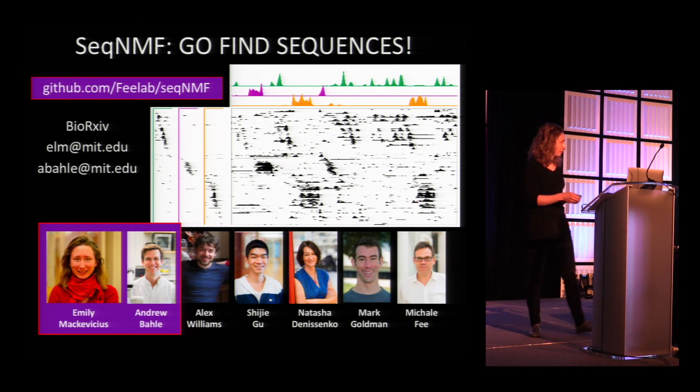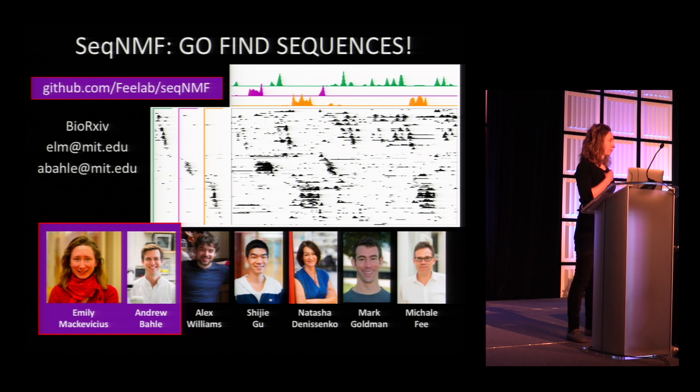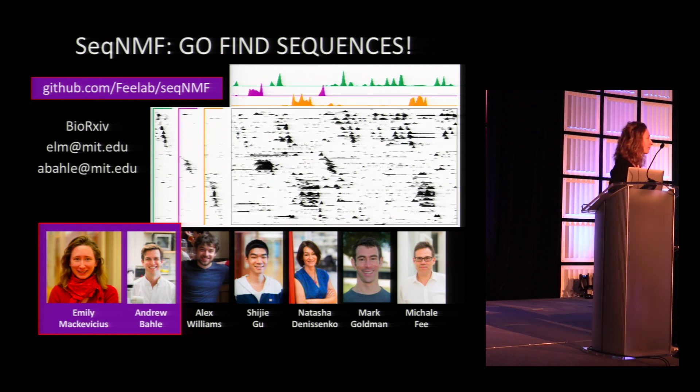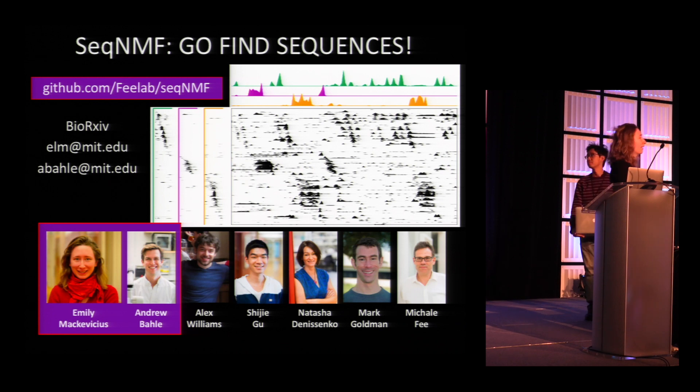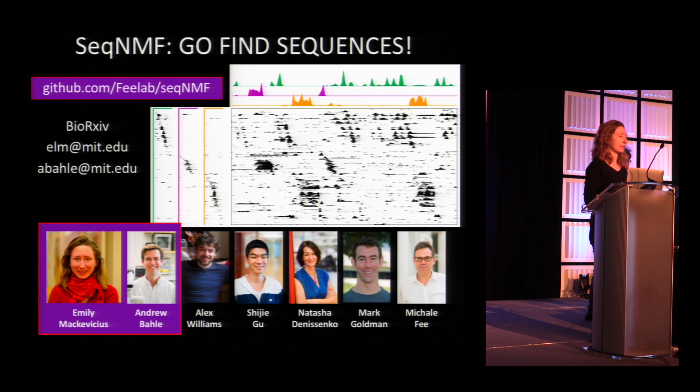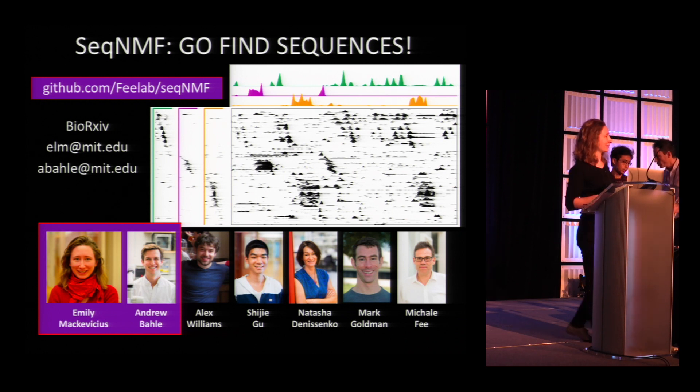Thank you very much. We have time for just one question. Thanks, Emily, that was a great talk. I wondered if you could say a little bit more about finding sequences where neurons participate in multiple sequences in a data set, for example. That's a really good question. The question is about finding neurons where neurons are shared between different sequences. We've tested this and it works well. There are some subtleties, but they're in the preprint. So yeah, it does work well in that case. Good question. Thanks very much.